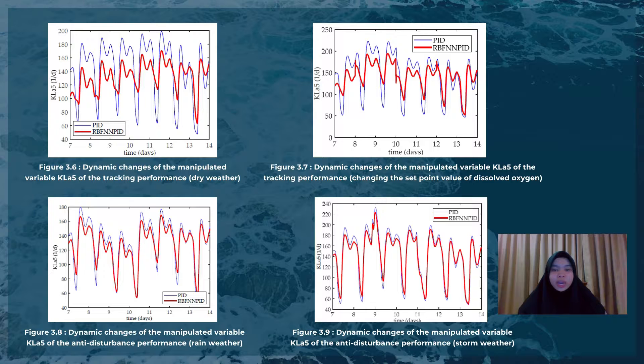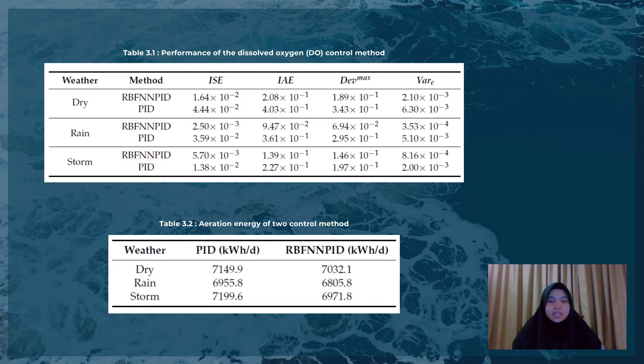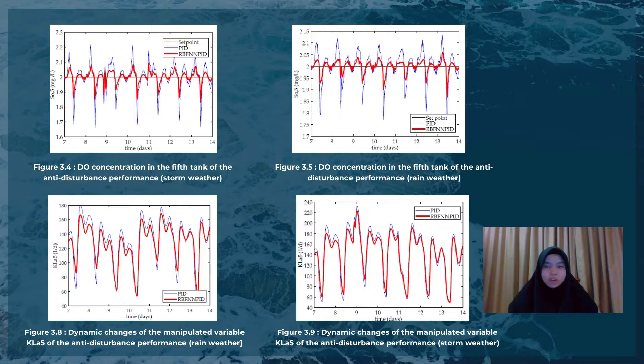We can achieve a more stable situation by supplying only the required liters of air to the aeration tank, achievable by utilizing RBF-NPID. This can minimize the cost of aeration, which is one of the primary electrical costs of wastewater treatment operation, as supported by data in tables 3.1 and 3.2. Based on figures 3.5, 3.4, 3.8, and 3.9, the RBF-NPID controller more quickly and accurately tracks the target output trajectory, indicating not only great tracking performance but also stronger anti-disturbance ability against rain and storm weather compared to the PID controller.